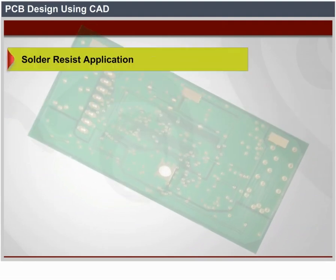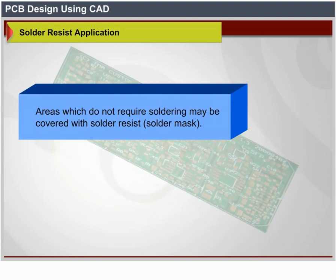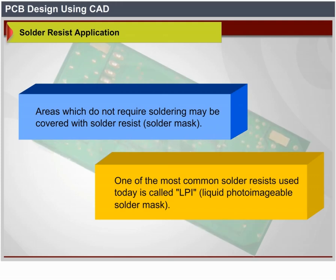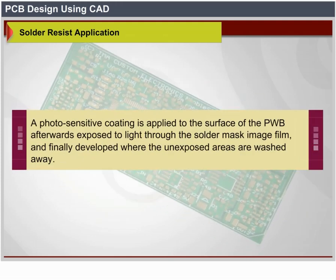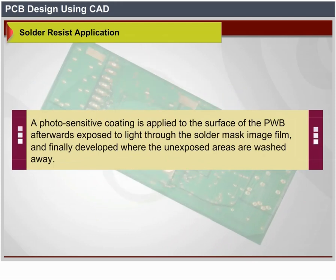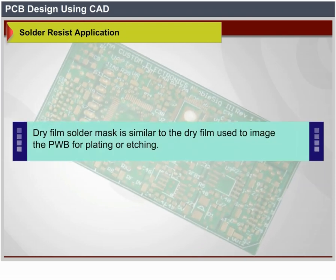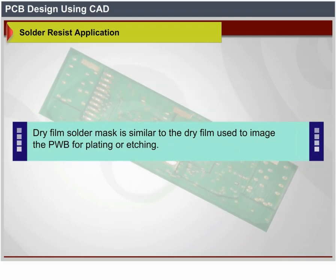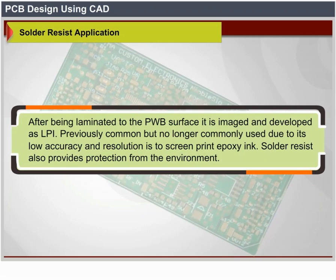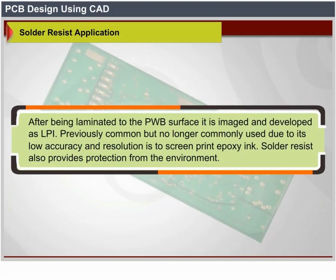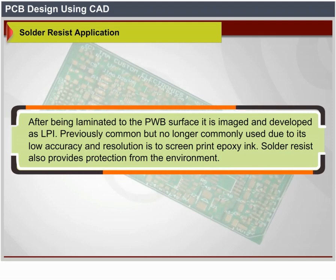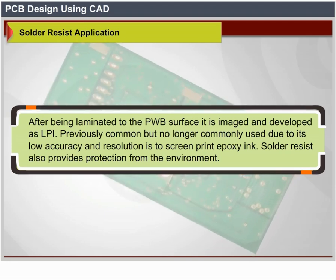Solder Resist Application: areas that should not be soldered may be covered with solder resist (solder mask). One of the most common solder resists used today is called LPI — liquid photo-imageable solder mask. A photosensitive coating is applied to the surface of the PWB, then exposed to light through the solder mask image film, and finally developed where the unexposed areas are washed away. Dry film solder mask is similar to the dry film used to image the PWB for plating or etching; after being laminated to the PWB surface, it is imaged and developed as LPI. Screen printing epoxy ink is no longer commonly used because of its low accuracy and resolution. Solder resist also provides protection from the environment.